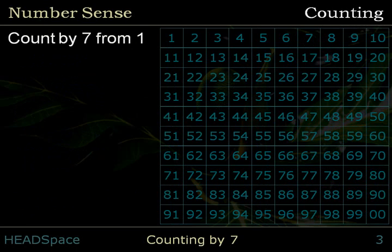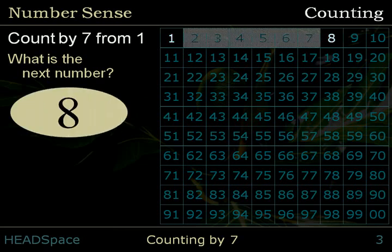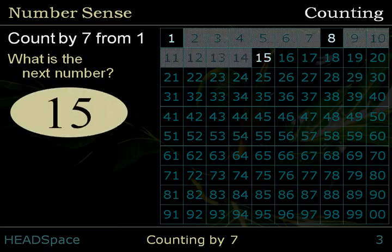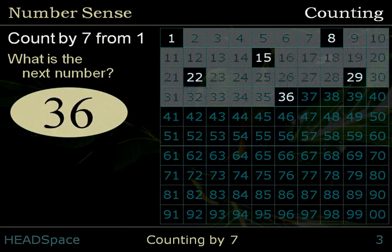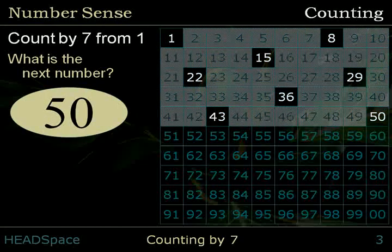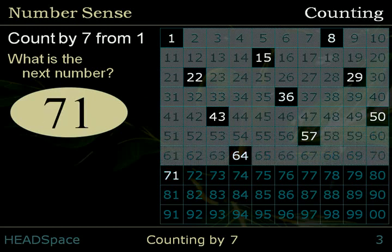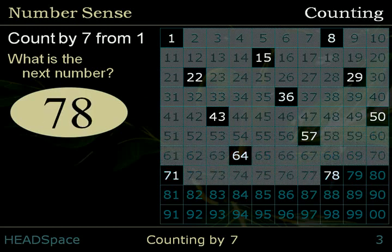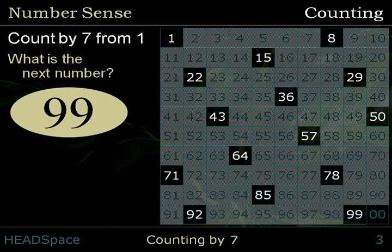Count by 7 from 1. What is the next number? 1, 8, 15, 22, 29, 36, 43, 50, 57, 64, 71, 78, 85, 92, 99.